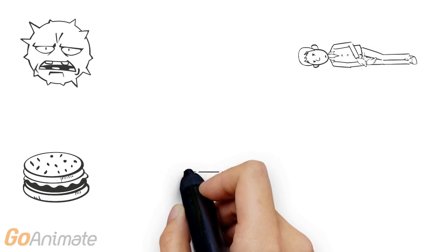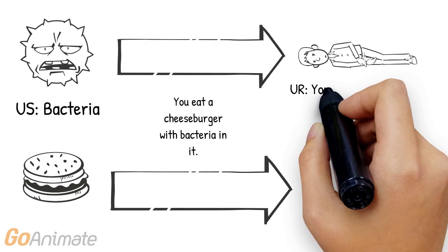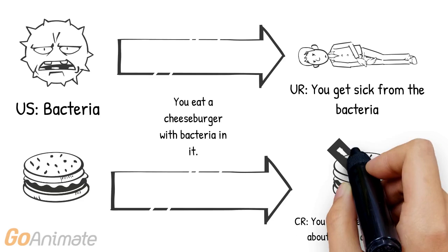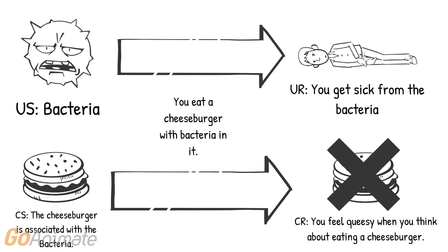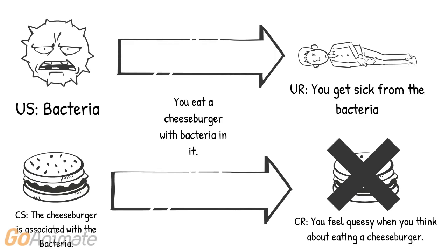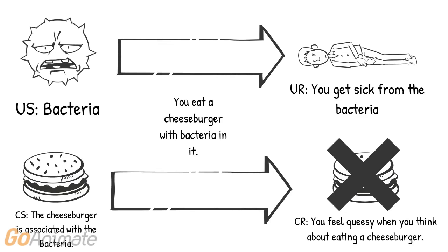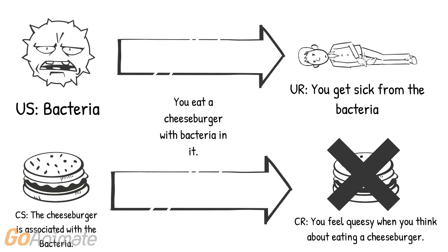Let's break classical conditioning down using an example. Let's say you ate a cheeseburger with bacteria in it, and the bacteria made you sick, so you no longer wanted to eat cheeseburgers because you associated the bacteria with all cheeseburgers. In this example, the bacteria in the cheeseburger is what causes you to get sick. The unconditioned stimulus is the bacteria, and the unconditioned response is you getting sick from the bacteria.